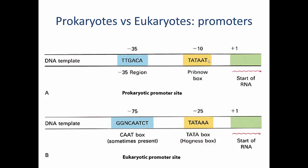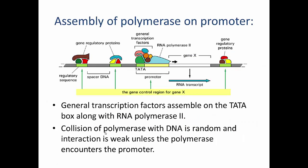In the eukaryotic promoter site there are broadly analogous regions. At plus one is the start of RNA transcription, and at minus 25 we have a TATA box. The TATA box only differs from the Pribnow box in its final nucleotide sequence. At minus 75 we have the CAAT box, which is not always present but often is.